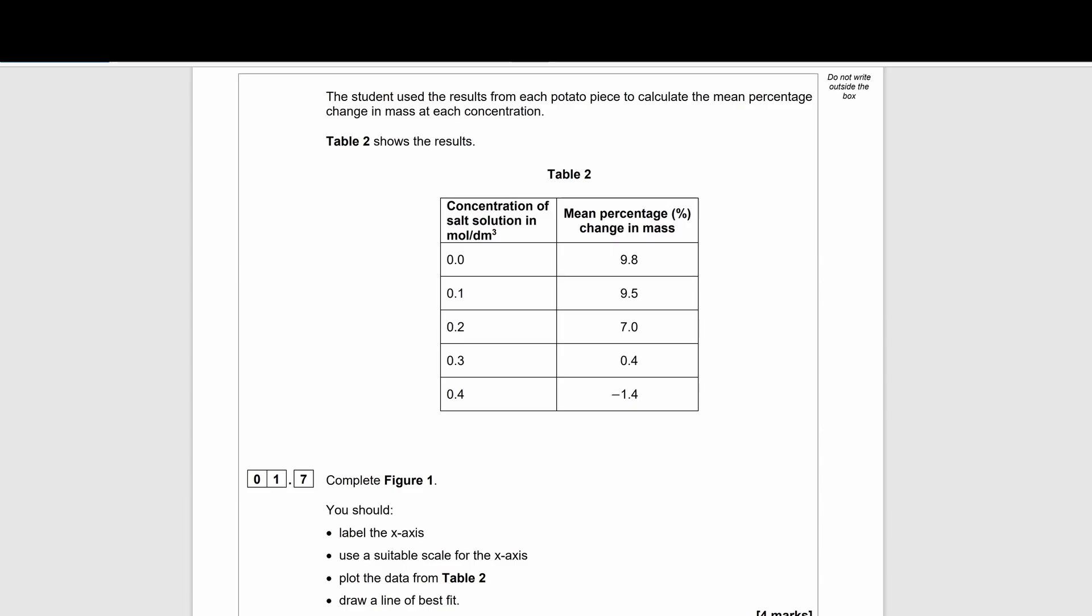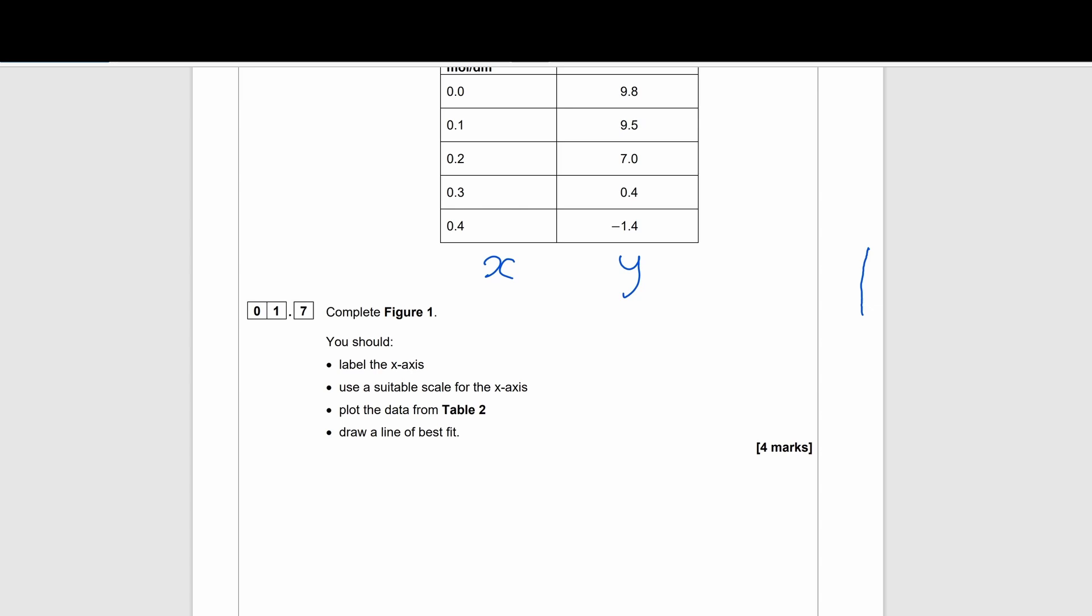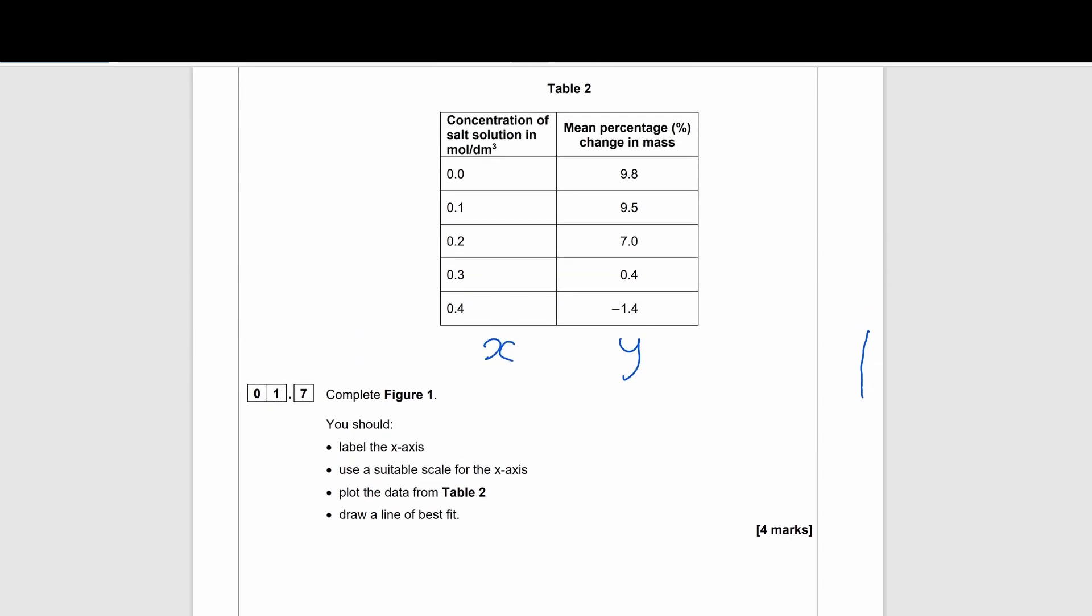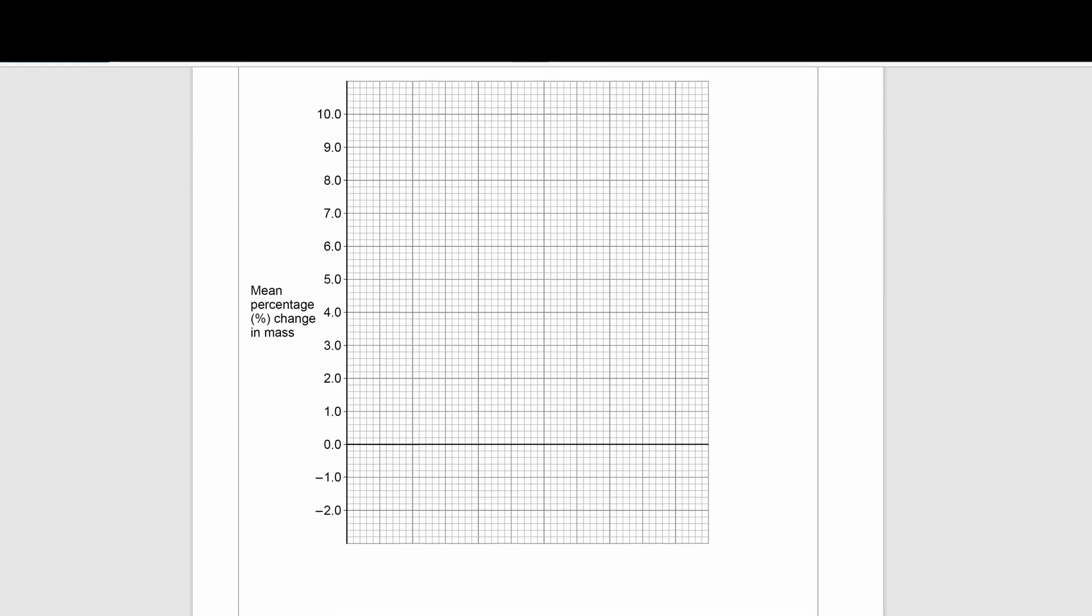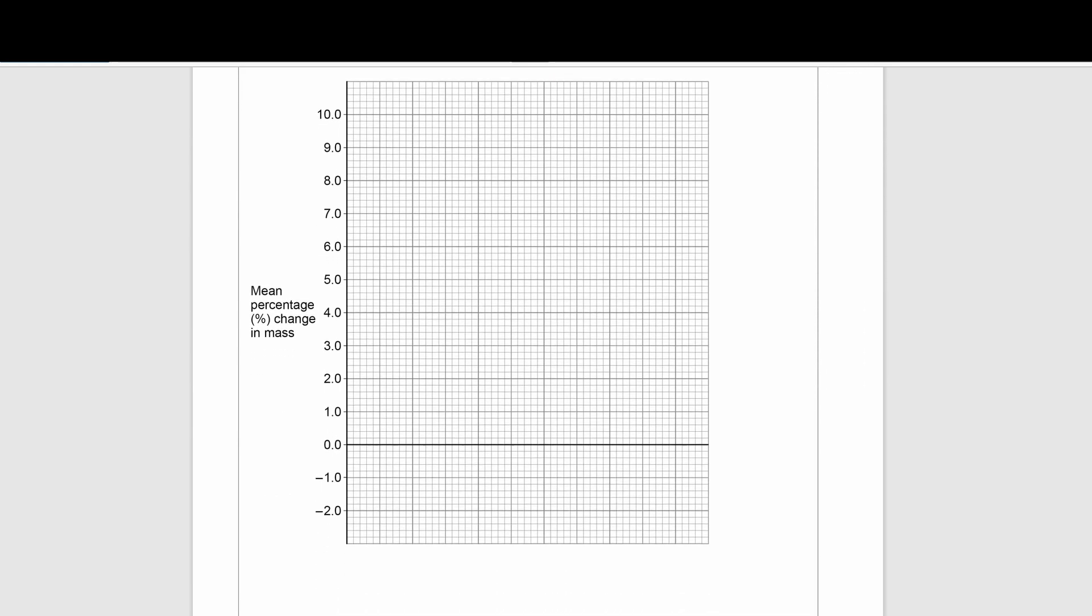You must expect at least one question in your paper that's got a table in it and you must expect at least one question that's got a graph involved. The questions could range from stating what the independent or dependent variable is from the table or graph, or it may ask you to describe the trends in the graph or describe the trends in the table, or it may ask you to plot a graph using the data in the table.